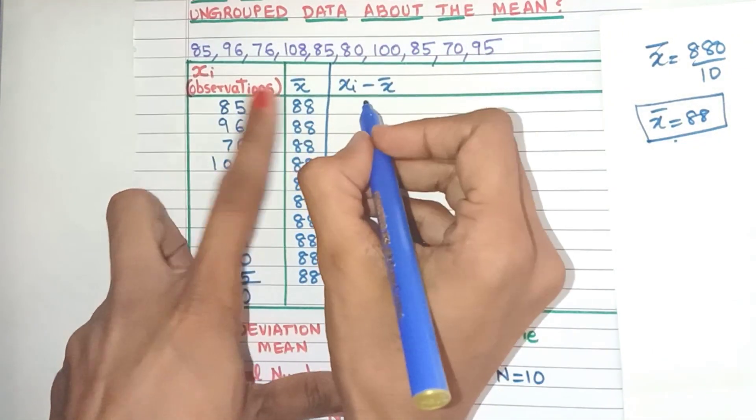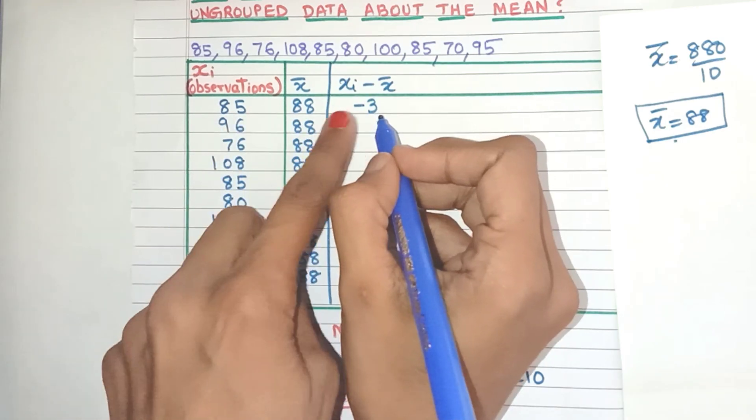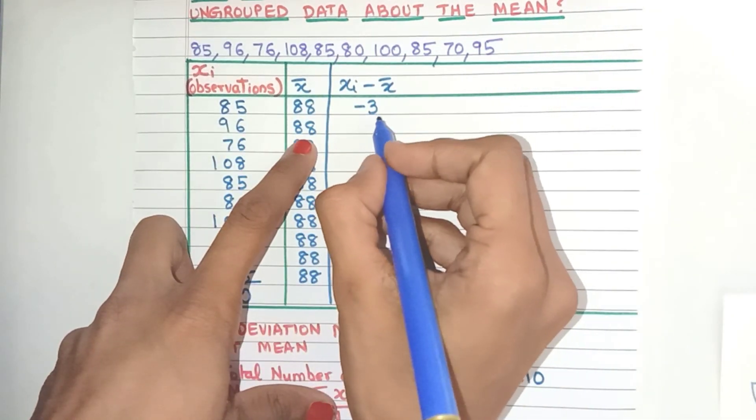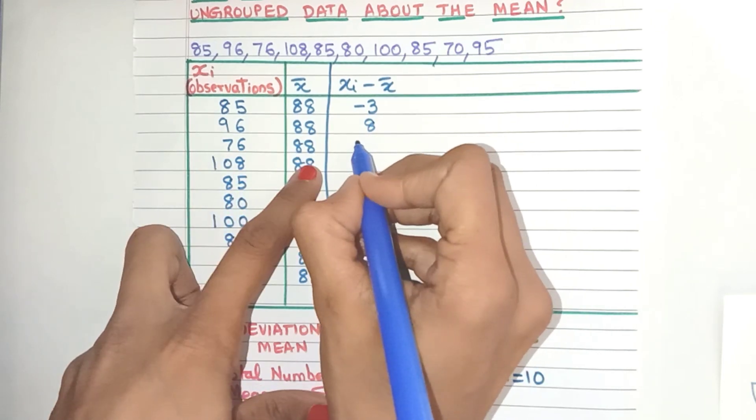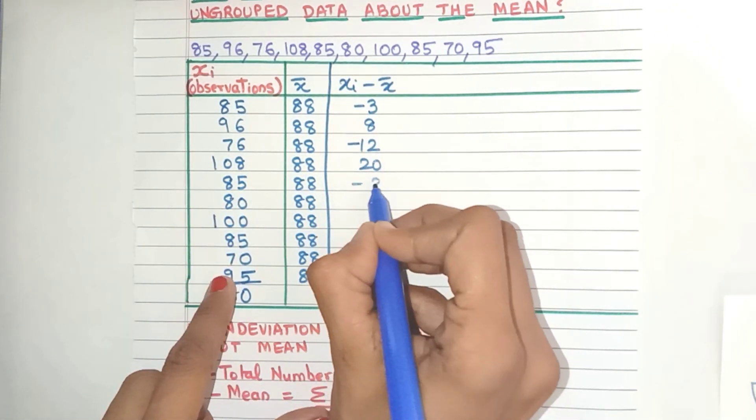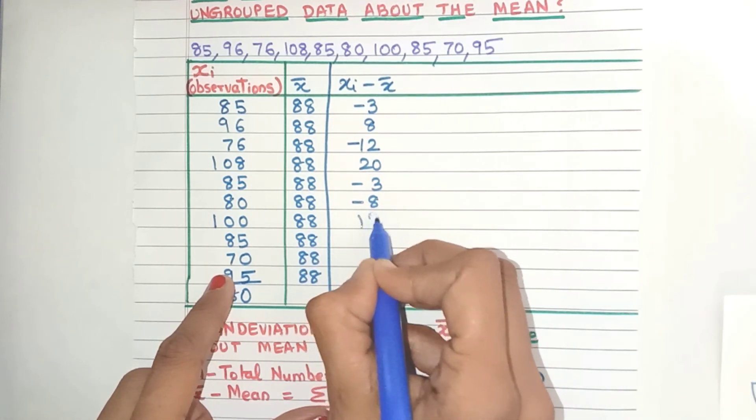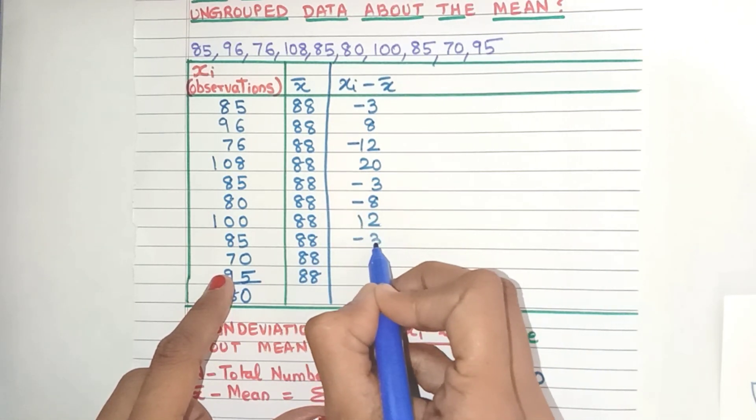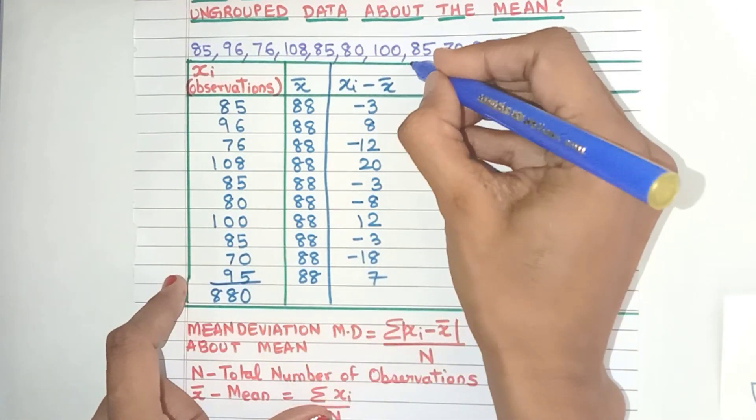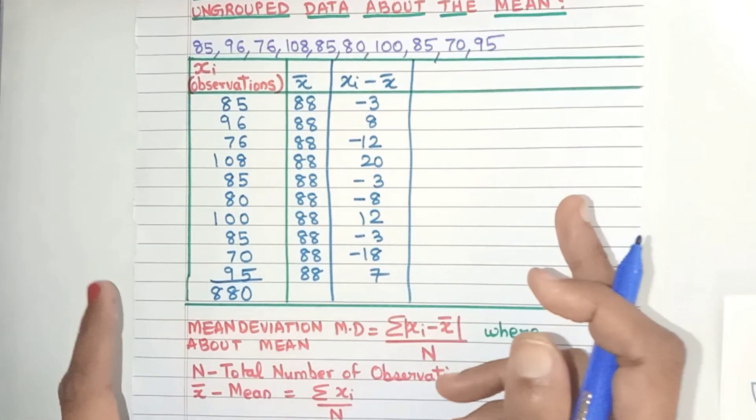So 85 minus 88 will give me minus 3. Remember we have to write the sign, don't ignore it. 96 minus 88 will give me 8. This minus 3, minus 8, 12 over here, minus 3, minus 18, and 7. So this is my xi minus x̄. Do it very carefully.